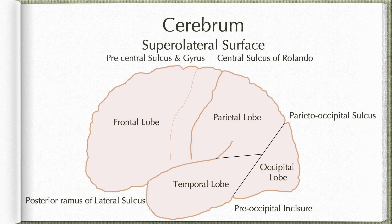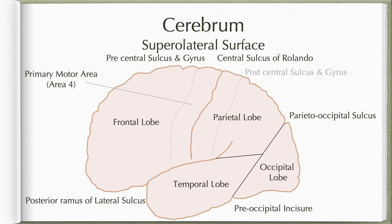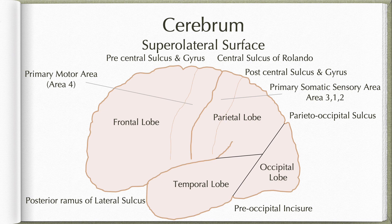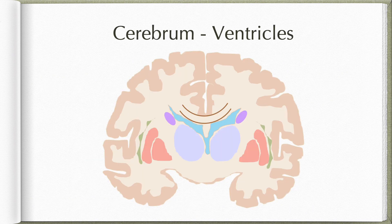Running anterior and parallel to the central sulcus is the precentral sulcus, and the area between the precentral sulcus and the central sulcus is called the precentral gyrus. This precentral gyrus is the primary motor area, or Brodmann's area number 4. Similarly, running posterior and parallel to the central sulcus is the postcentral sulcus, and the area between the central sulcus and postcentral sulcus is the postcentral gyrus — the primary somesthetic area, or Brodmann's area 3, 1, 2.